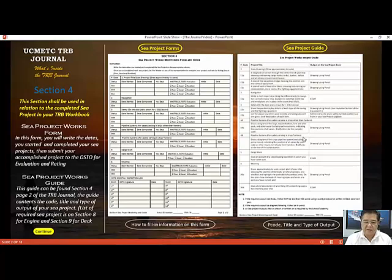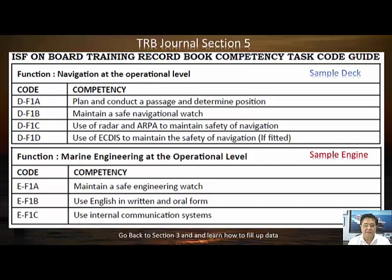Welcome to section five of your training record book journal. It contains the ISF onboard training record book competency task code guide. This page contains the codes for each competency by function — for example, on the deck side, navigation at the operational level, and on the engine side, marine engineering at the operational level. The code is on the left side and the competency description is on the right side.